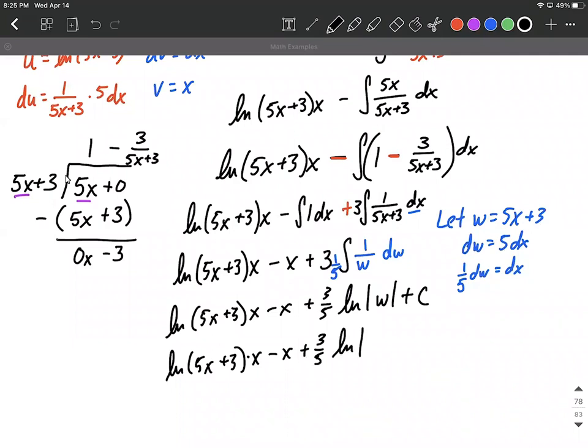Instead of having w involved here, we want to replace w with five x plus three. Back from that let statement, still plus c hanging out at the end.